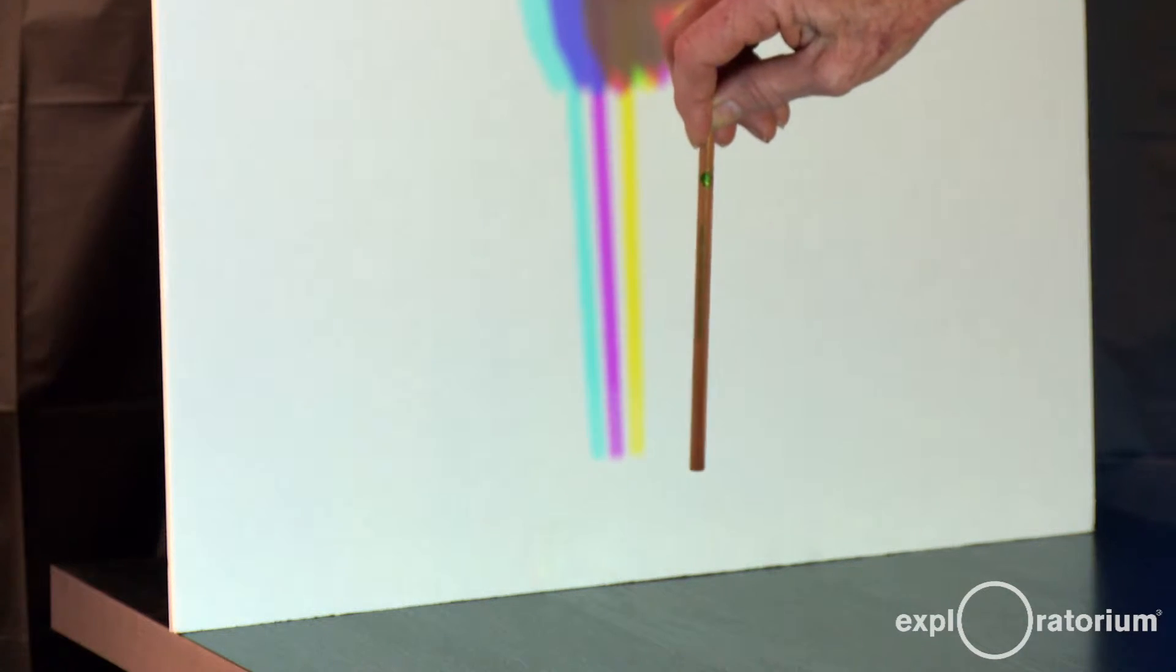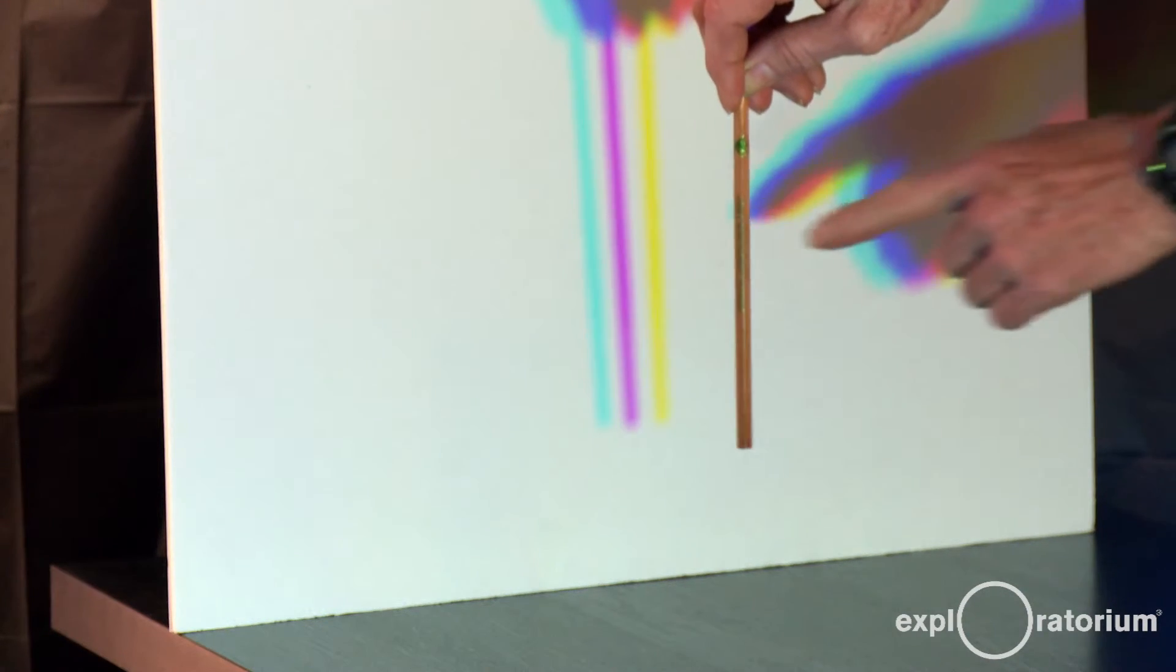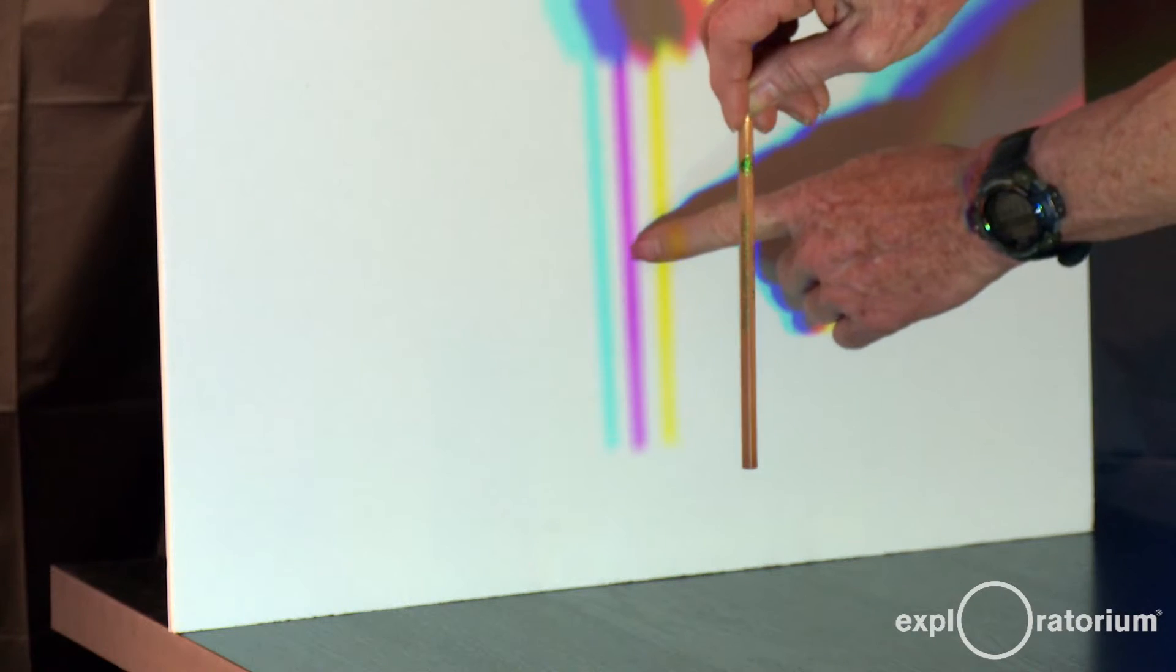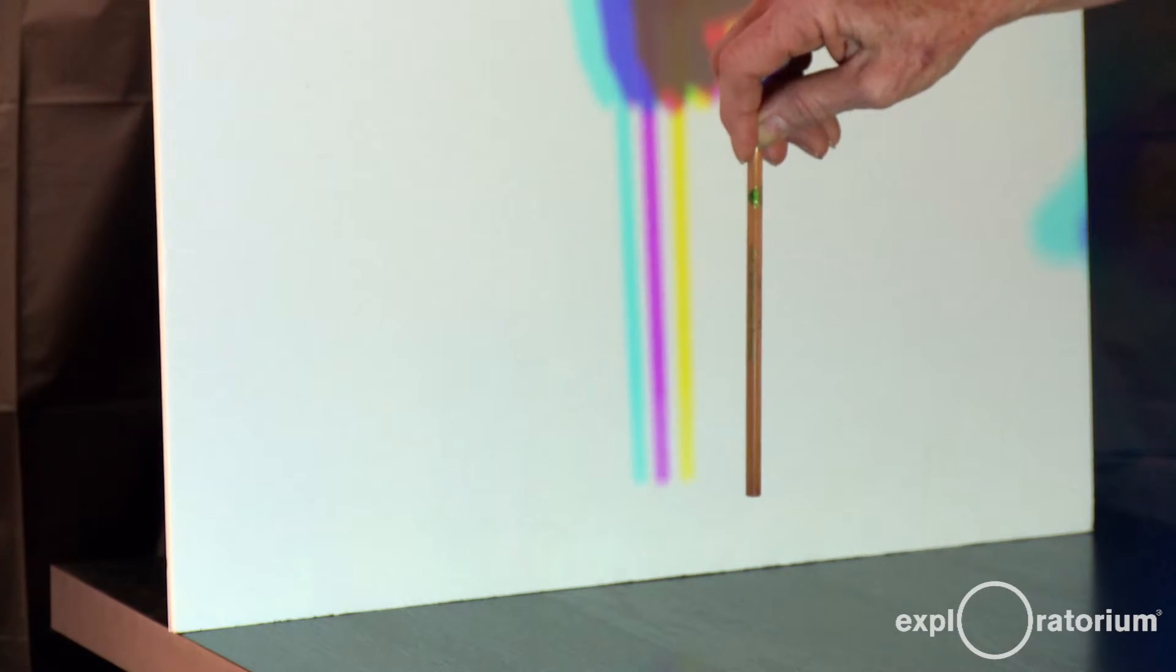Now when I make my shadows, I see three shadows. The middle shadow here is magenta. We can understand how that's made.